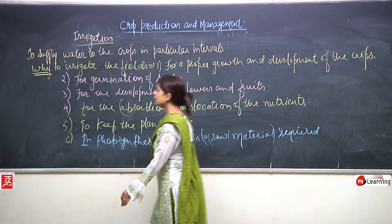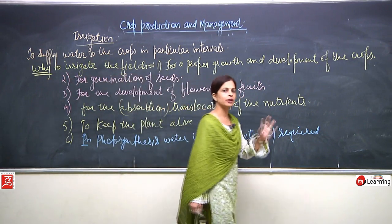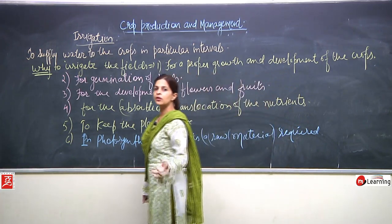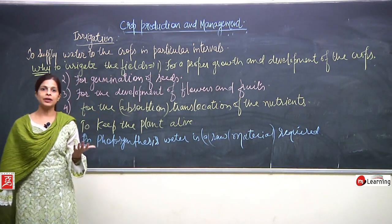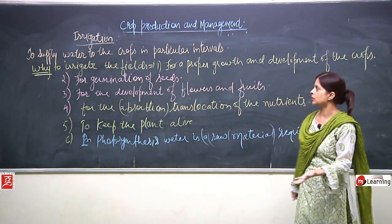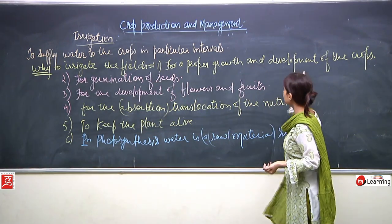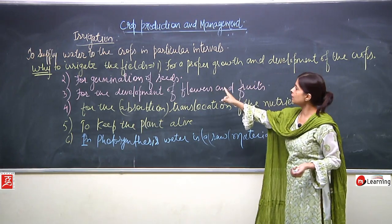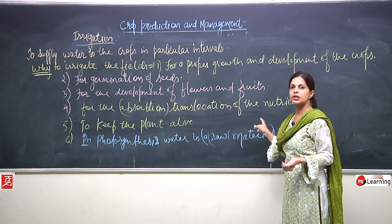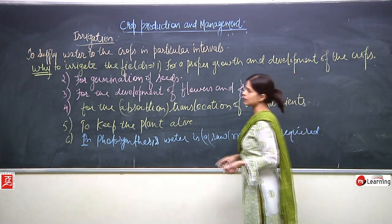These all points are about why irrigation is important. Irrigation means to supply water to the crops in a field at different interval stages. Why is irrigation necessary? For the proper growth and development of the plant, for germination of seeds, for the development of flowers and fruits, for absorption and translocation of nutrients, for keeping the plant alive, and for the process of photosynthesis.